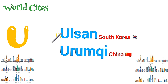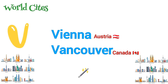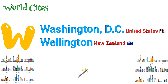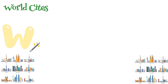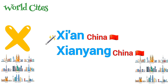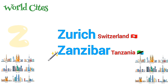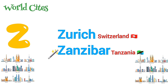U is for Ulaanbaatar, Utrecht. V is for Vienna, Vancouver. W is for Washington D.C., Wellington. X is for Xi'an, Shenyang. Y is for Yaounde, Yangon. Z is for Zurich, Zanzibar.